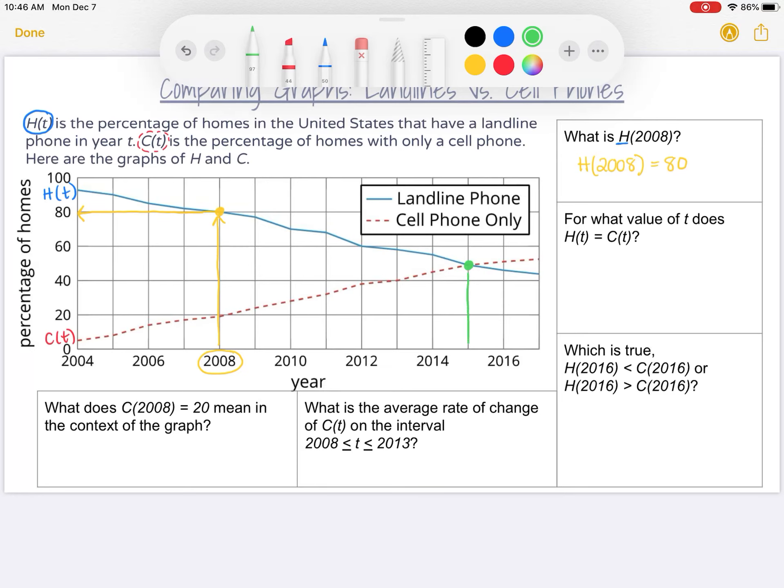So now I just need to figure out at what time is this occurring. To do that, I need to go down to my x-axis where the time is. I can see I'm between 2014 and 2016. So I must be at 2015. So at what value of t does H(t) equal C(t)? That's going to be at t equals 2015. That means H(2015) is equal to C(2015). That means in 2015, the percentage of homes with a landline was the same as the percentage of homes with only a cell phone.